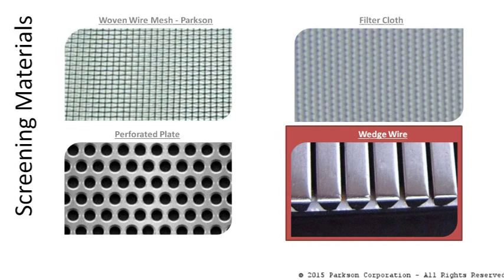Wedge wire is in the same camp as perf sheet with the same shortfalls due to the ratio of open to closed space. In addition, the wedge wire will shear the flocculated solids due to its shape, which leads to even lower capture.